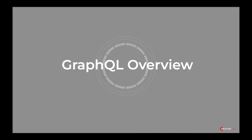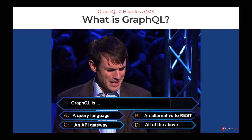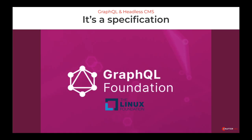We're going to start at the beginning. Just what is GraphQL? Is it a query language? Is it an alternative to REST? Is it an API gateway? These are the kinds of questions we hear from folks new to GraphQL. It can be used in all of those ways, but that's not what GraphQL is. GraphQL is a specification for data retrieval and data mutation that was started by Meta and later contributed to the open source community. It is now maintained and managed by the Linux Foundation.